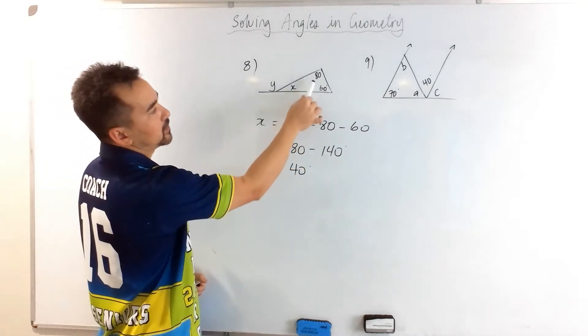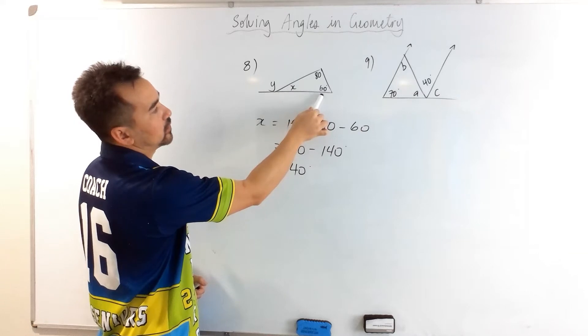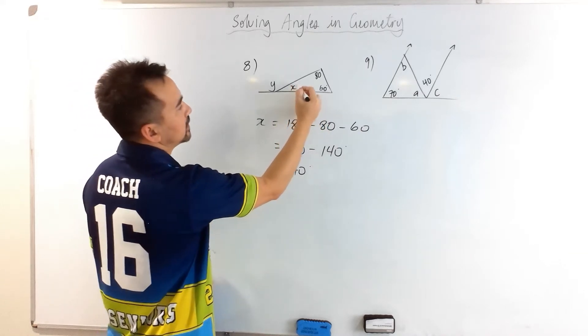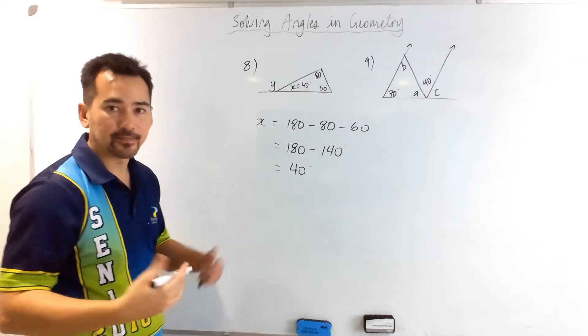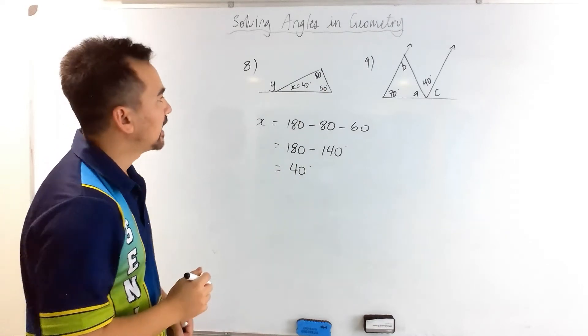So 80 plus 60 is 140, 140 plus 40 will make a total of 180, so it works. And then,